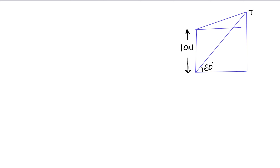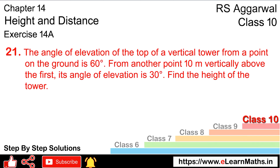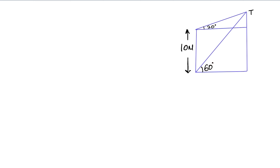Yeh yahan se ek line hai aur yeh angle of elevation de raha hai 30 degree ka. Ab dekhiye aage kya kya ho raha hai. Find the height of the tower — toh humein yeh tower ki height nikalni hai. Toh naming kar dete hain: A, B, C, and D.